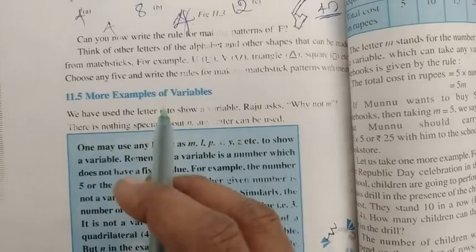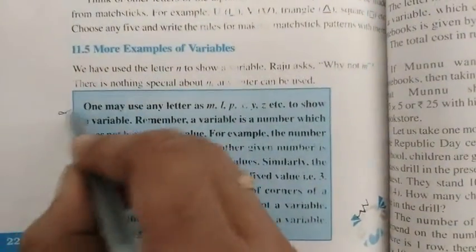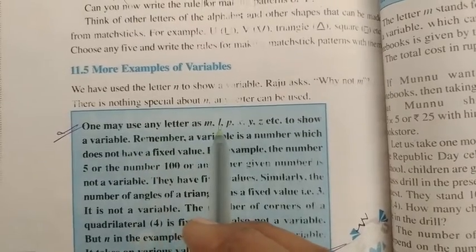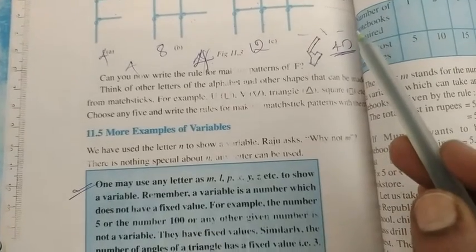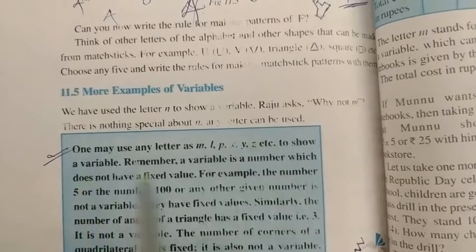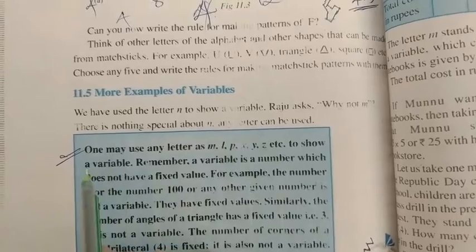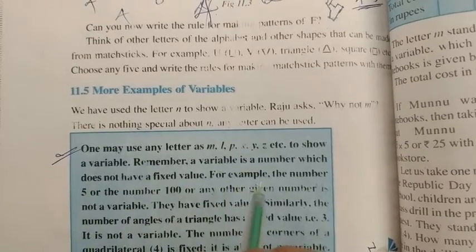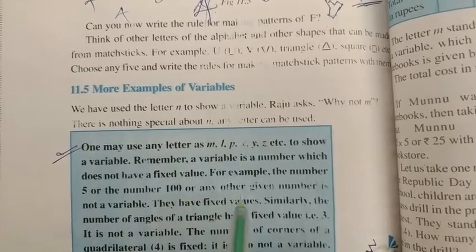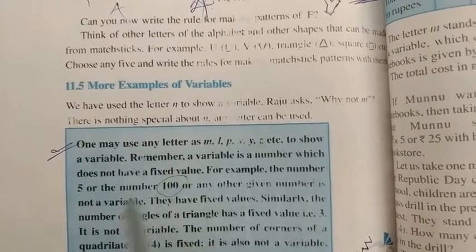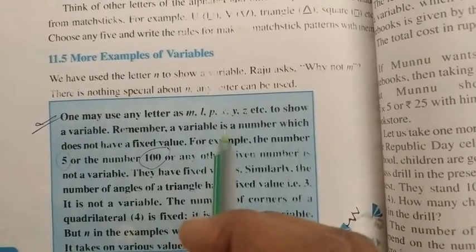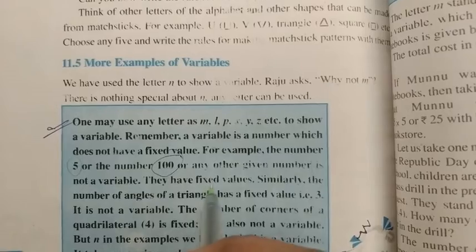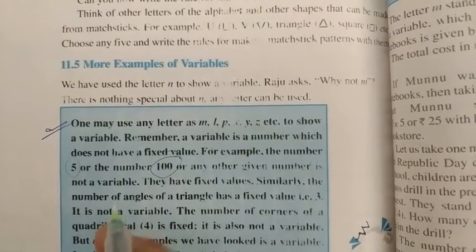More examples of variables. See children, some note is there. You have to write in notebook. Note: One may use any letter as m, l, p, x, y, z, etc. to show a variable. Remember, a variable is a number which does not have a fixed value. For example, the number 5 or the number 100 or any other given number is not variable. This is number, not a variable. Number is fixed but variable is not fixed. Any other given number is not variable. They have fixed value. Number is a fixed value. Variable is not fixed.